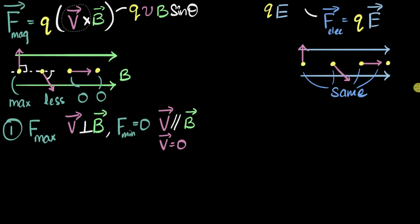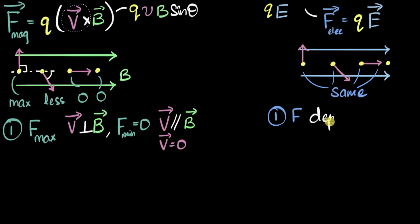They're all going to experience the same force. So the first big difference is that the magnetic force depends on the velocity, whereas the electric force does not depend on the velocity at all.